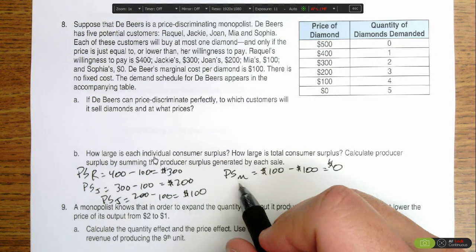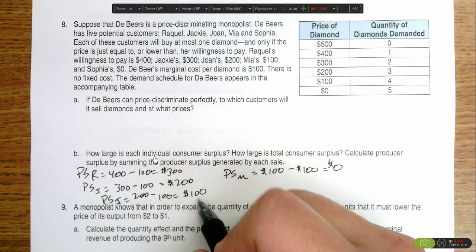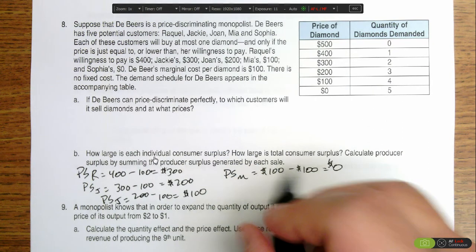So total producer surplus in this market would be $300 plus $200 plus $100 plus zero. That gives us total producer surplus equal to $600.